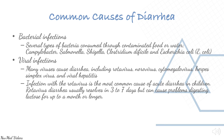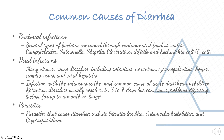Infection with the rotavirus is the most common cause of acute diarrhea in children and usually results in three to seven days of illness. Parasites that cause diarrhea include Giardia, Entamoeba, and Cryptosporidium.